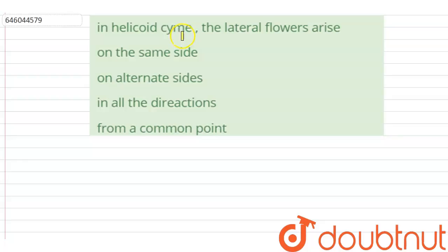Hello students. The question is: In helicoid cyme, the lateral flowers arise... The options are: on the same side, on alternate sides, in all directions, from a common point.